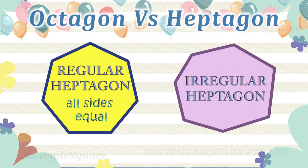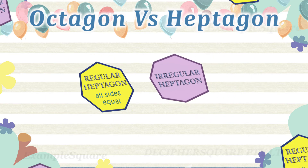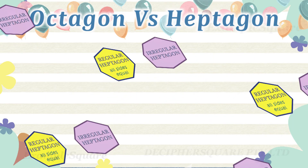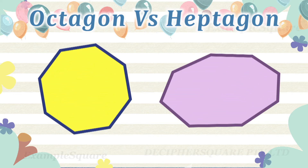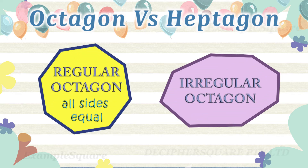Similarly, if all the eight sides of the octagon are equal and all the eight interior angles of the octagon are equal, then it is a regular octagon. Otherwise, it is an irregular octagon.